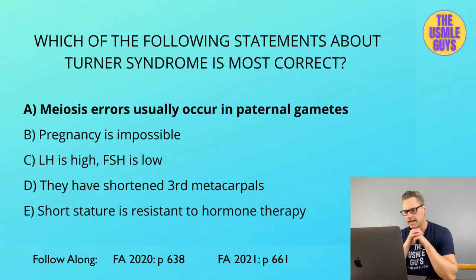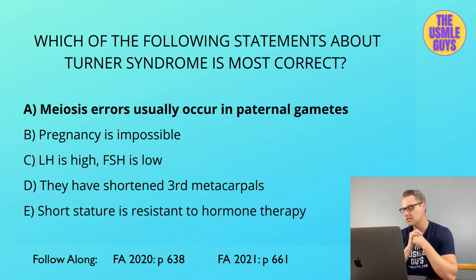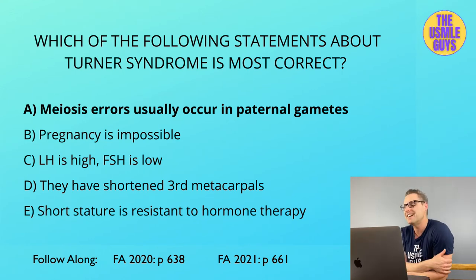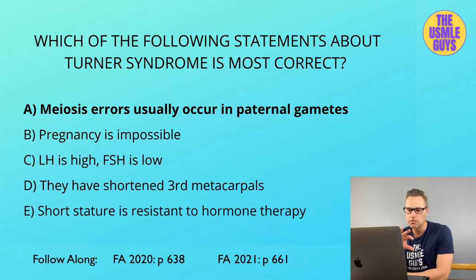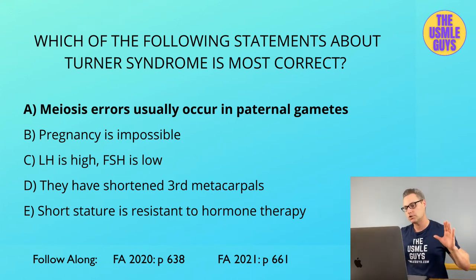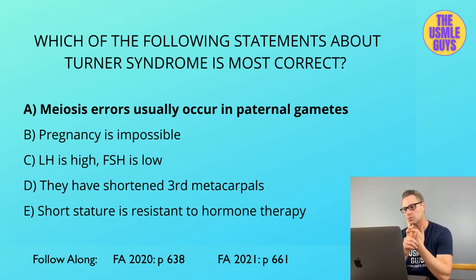The correct answer here is A. Turner syndrome is our most common cause of primary amenorrhea. The female in this scenario is 45XO. Chromosomal loss is often due to non-disjunction during meiosis or mitosis, with meiosis errors usually linked to paternal gametes — sperm is missing the X chromosome. If the mitotic error happens after the zygote has begun forming, we see mosaicism, where the X chromosome loss isn't in all cells, resulting in a less severe condition.